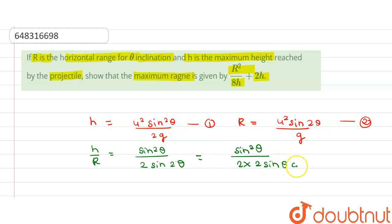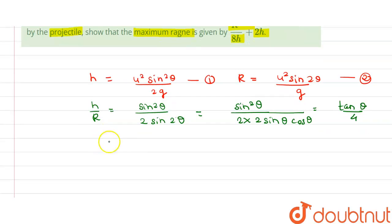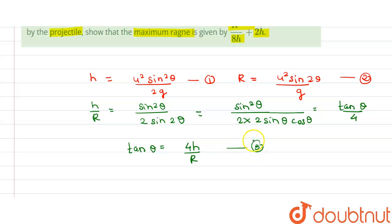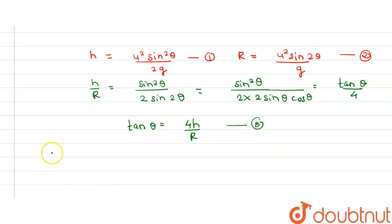Since sin2θ can be written as 2 sinθ cosθ, this simplifies to sinθ / (4 cosθ), which equals tanθ / 4. So this means tanθ = 4H / R. Let us call this equation 3.